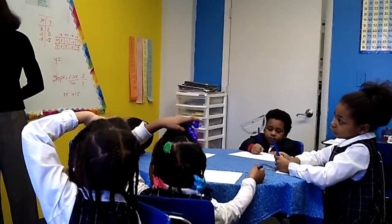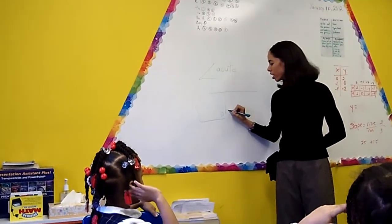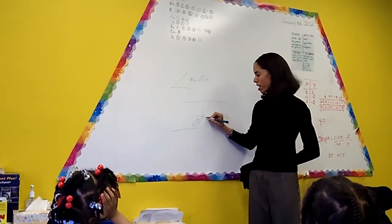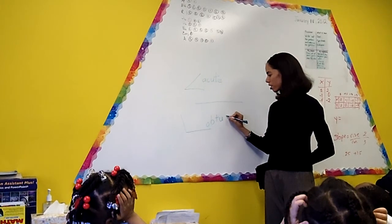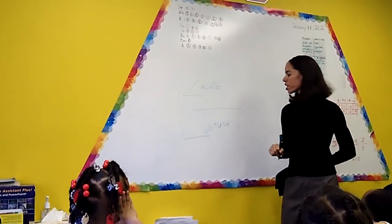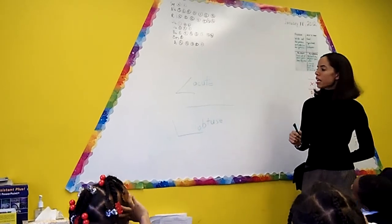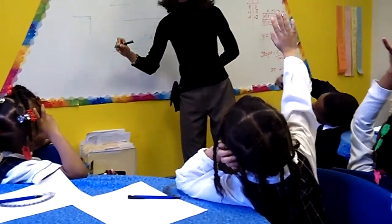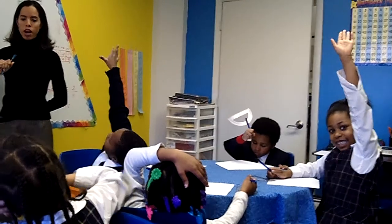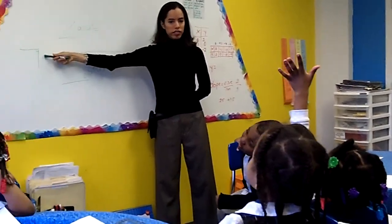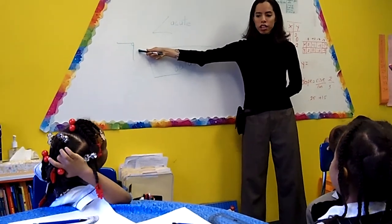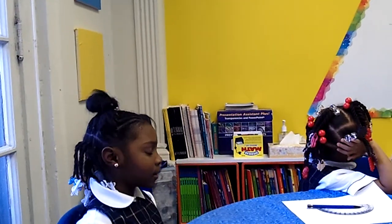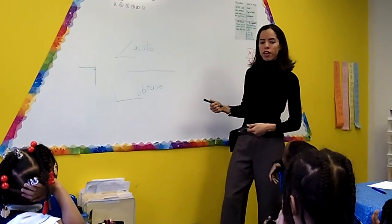Let's sound out obtuse: ob, t, use — obtuse. And then there's another E on the end. So there's an obtuse angle. We have our types: an acute angle, a straight angle, and one more that everyone knows and loves. I'll make it upside down and put my little corner in there. What is this? Very good — this is a right angle. And how many degrees are in a right angle? Hannah? 90. 90 degrees. Very good.